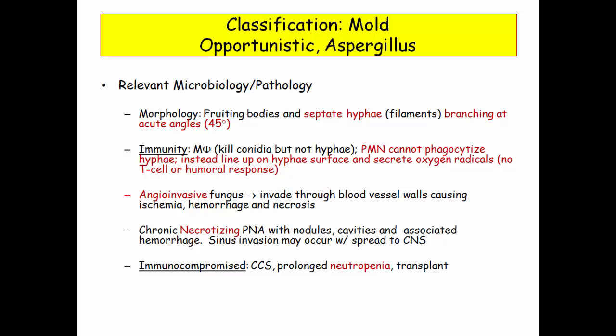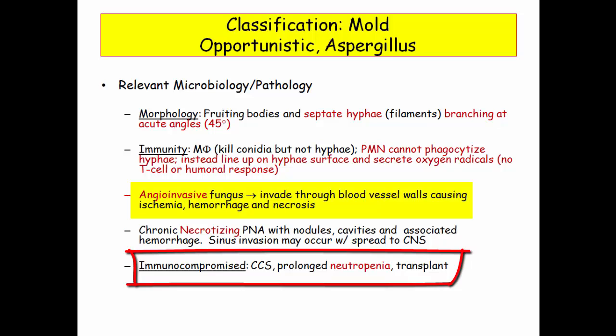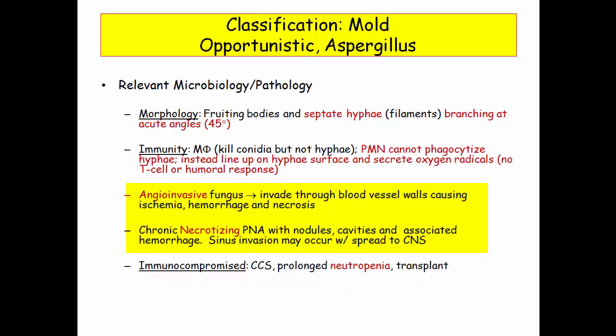PMNs cannot phagocytize the hyphae, so they line up on them and fire their arsenal trying to kill them — which is great, except when there are no neutrophils. That is the setup for angioinvasive infection. Angioinvasive means necrosis, and indeed that's what's seen: necrotizing pneumonia or cavitary lesions in the setting of acute infection. Let's keep this bug on the short list of causes for cavitary lung lesions.